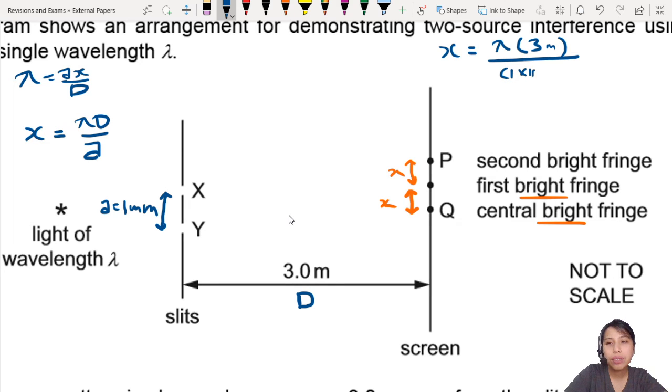Divide by slit separation, so that's 1 times 10 to the negative 3 meters. So my separation will be 3 divided by 1 times 10 to negative 3, which is a whopping big 3000 lambda. I don't know what the lambda is, but I'm just gonna write 3000 for now. So that is x.